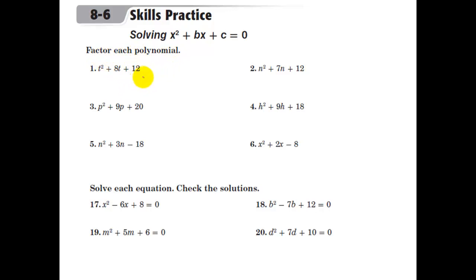Factor each polynomial. We don't have to solve yet, we're just factoring. I'll write down my two sets of parentheses. I want to find a couple of numbers that multiply to 12. I could go 12 times 1, I could go 6 times 2, and I could go 4 times 3. Those are the possible combinations. Just look and see which of those adds up to 8. Clearly 6 and 2. So my two factors are t plus 2 and t plus 6.